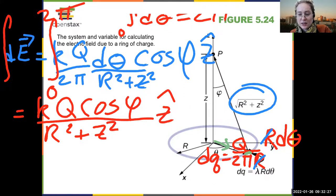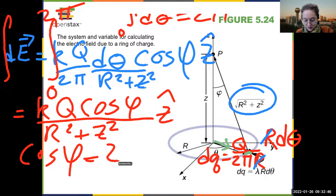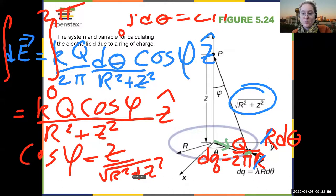So I get K Q cosine phi over r squared plus z squared times 2 pi z hat. And you can write cosine phi in terms of your r and z, and you could get a more complicated expression.